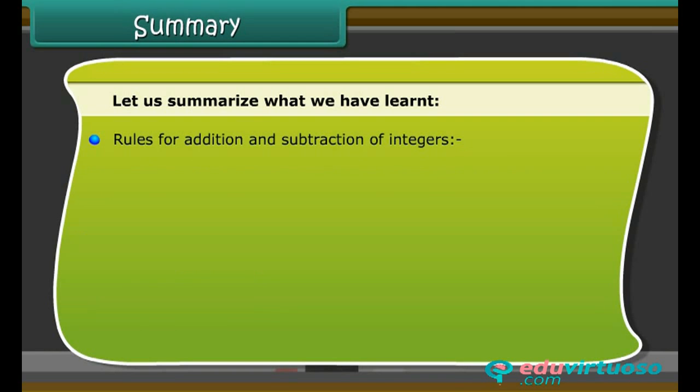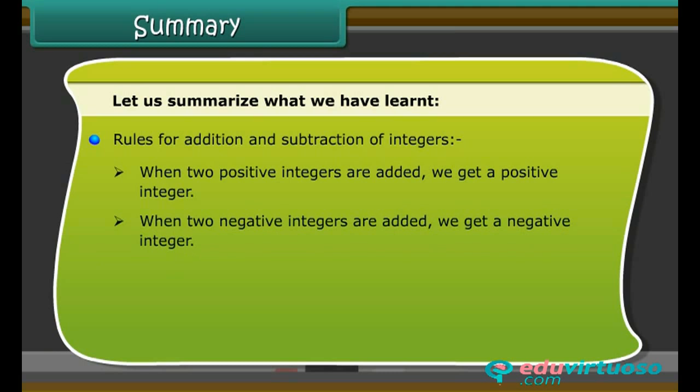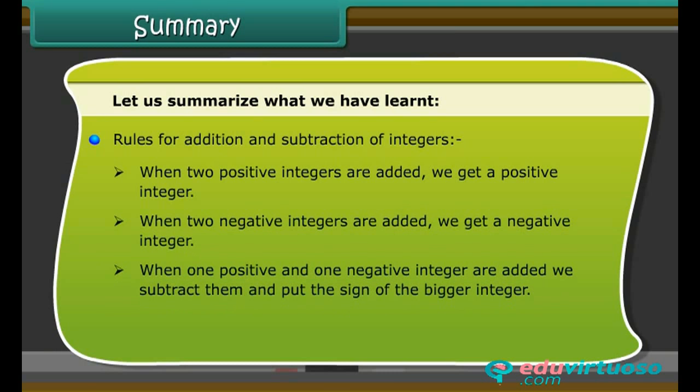Rules for addition and subtraction of integers: 1. When two positive integers are added, we get a positive integer. When two negative integers are added, we get a negative integer. When one positive and one negative integer are added, we subtract them and put the sign of the bigger integer. The subtraction of an integer is the same as the addition of its additive inverse.